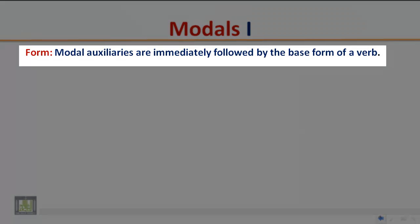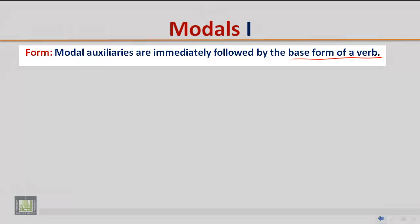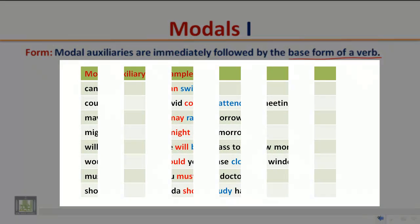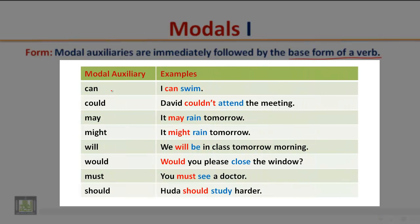Form: Modal auxiliaries are immediately followed by the base form of a verb. Use the base form of the verb after the modal auxiliaries. Example: Can — I can swim.